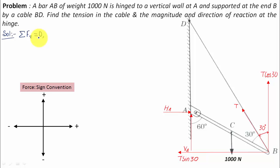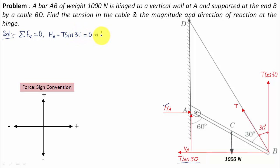Any force acting to the right is taken as positive; any force to the left is negative. HA acts to the right (positive), and T sine 30 acts to the left (negative). So: HA minus T sine 30 equals zero, or HA equals T sine 30. This is equation number one. Once we get the value of T, we can get HA.